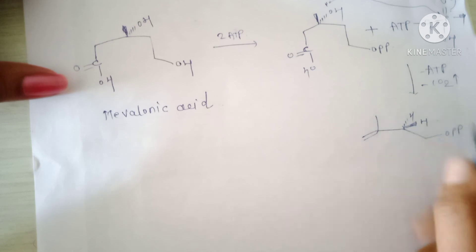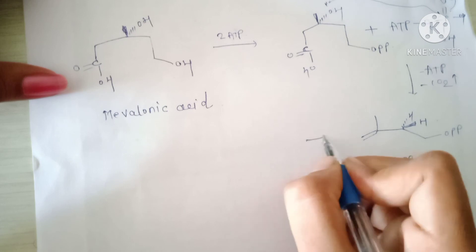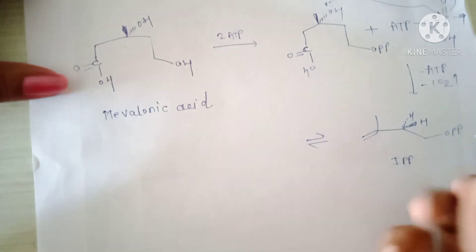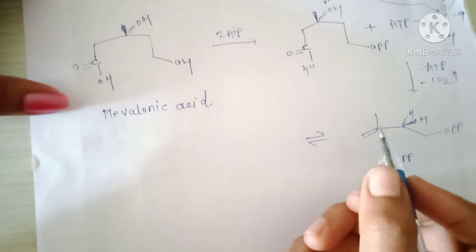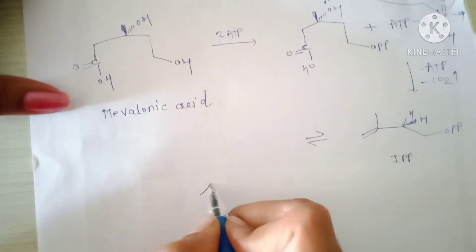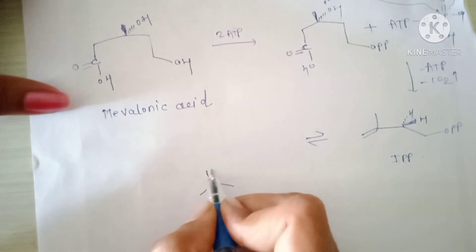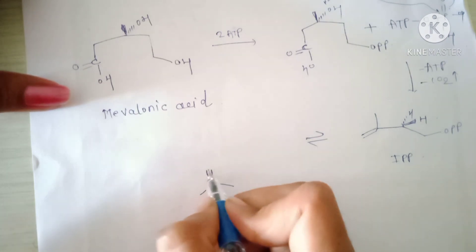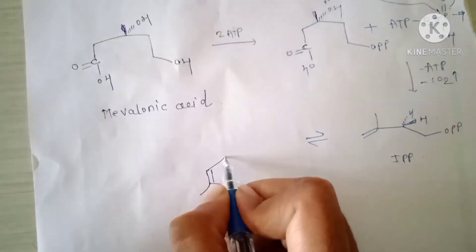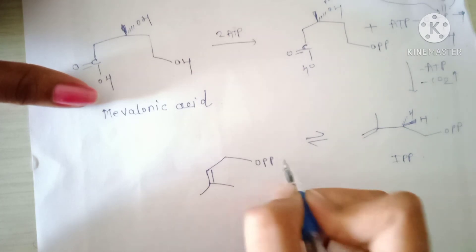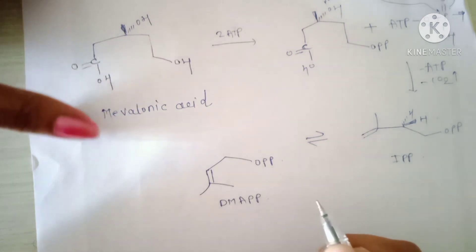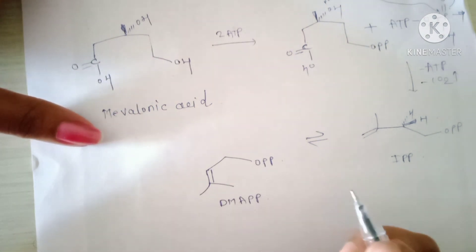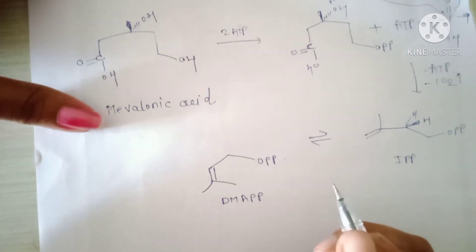This is the structure of IPP. The next step is tautomerism, giving the structure of DMAPP: CH3–CH3–C=CH2–OPP. This is the structure of DMAPP, meaning dimethylallyl pyrophosphate. Thank you so much for watching this video.